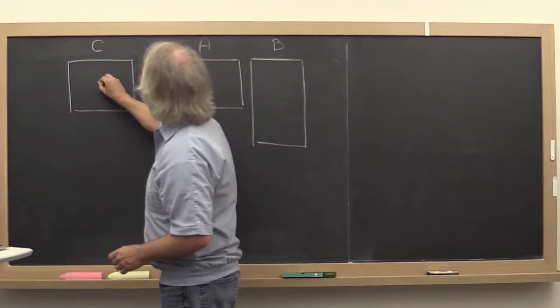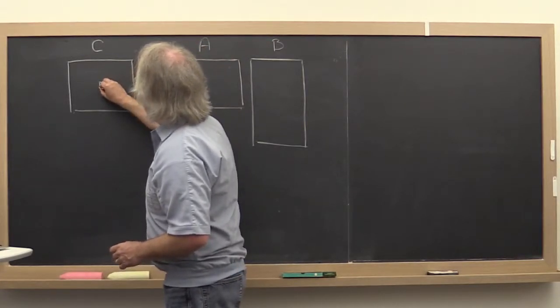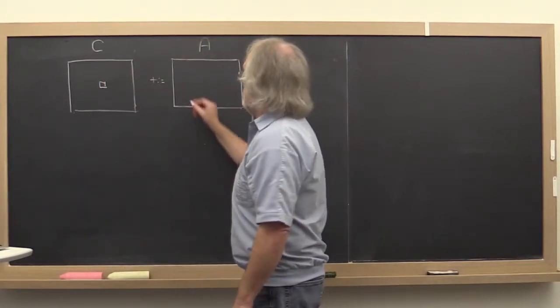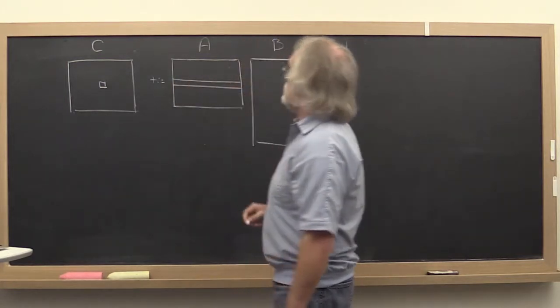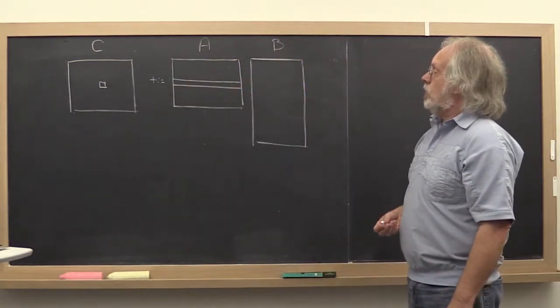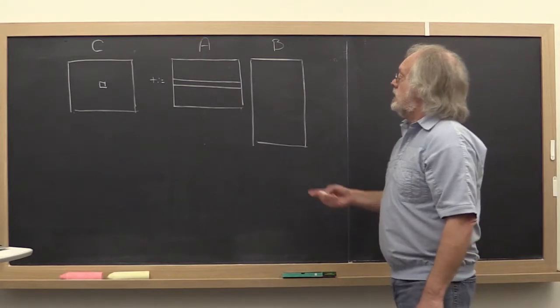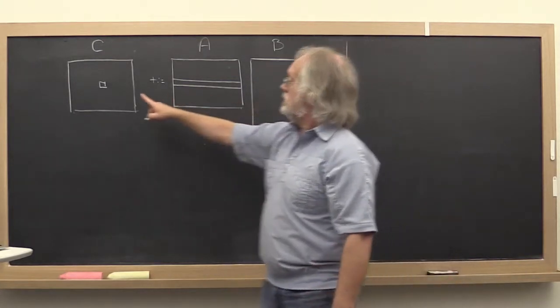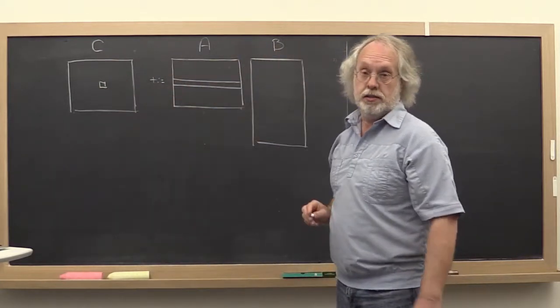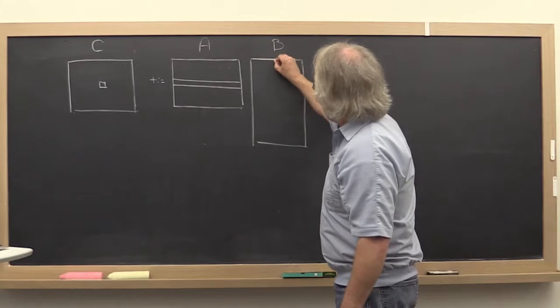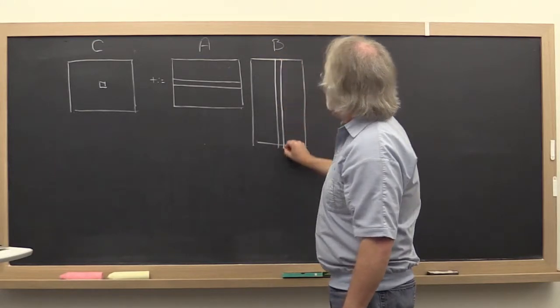Remember how when you do a matrix matrix multiply, you compute an entry in C by taking the dot product of the corresponding row of A with the column of B that is in the same column as the corresponding column in C where this element exists, right?